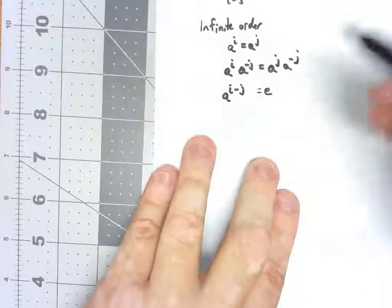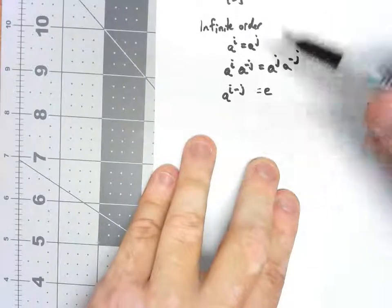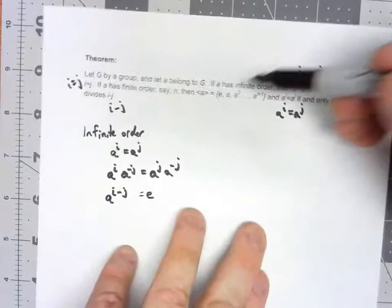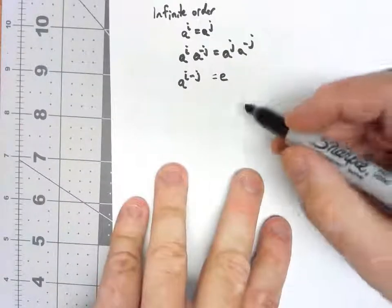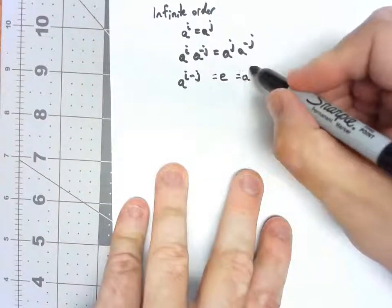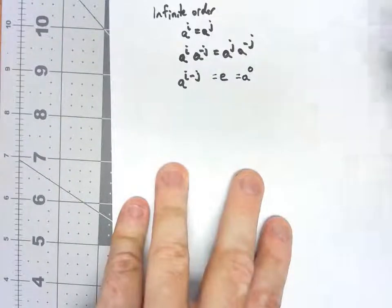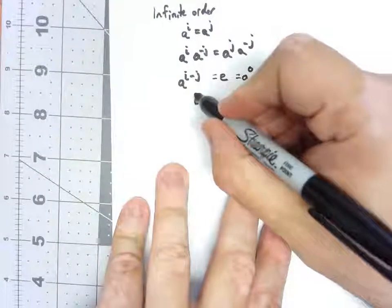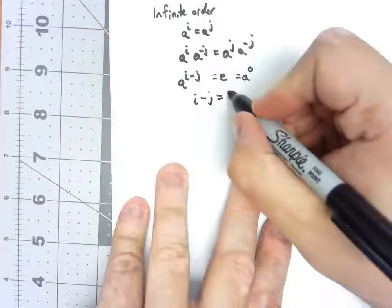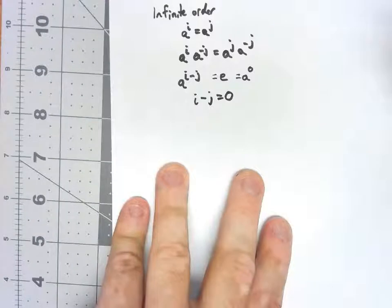But wait a minute, we know that if A has infinite order, then the only power that would give me the identity is A to the zero. Every other power has to be something else. Therefore, if A to the I minus J has to be A to the zero, the only power that does it is if I minus J is equal to zero.